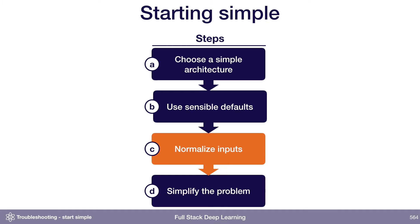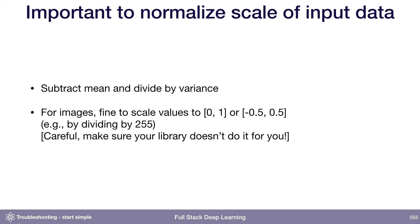The next thing to do is normalize your inputs. This means subtracting the mean and dividing by the variance. For images, it's fine to just scale the values between 0 and 1 or between -0.5 and 0.5. This step feels very small but is in fact very important — it can be the difference between your neural network working and not working.